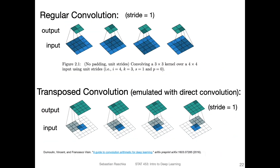Here's another example. This is a regular convolution with stride one going from a four-by-four input to a two-by-two output. And here is a transposed convolution emulated with a direct convolution. It's a little bit simpler to see because there's no stride — you can just see there's a padding of two pixels on each side. This achieves the opposite: going from a two-by-two input into a four-by-four output, whereas at the top we go from four-by-four to two-by-two.